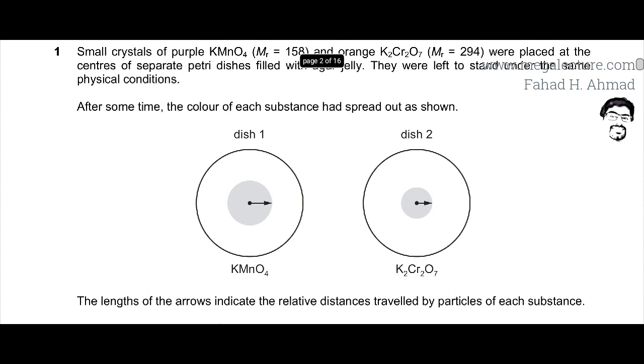This is a question about diffusion. Diffusion is when particles start moving in random directions due to random movements in liquids and gases. They start moving randomly and they spread. They spread from a region of higher concentration to a region of lower concentration.